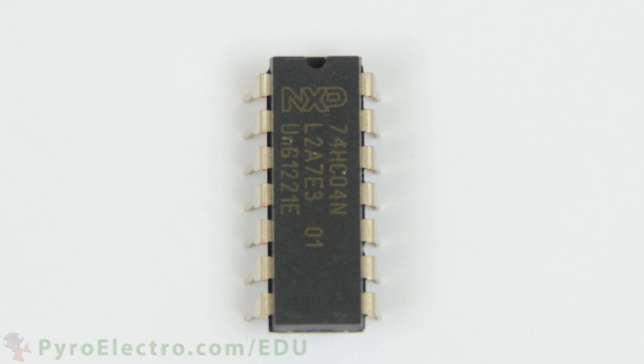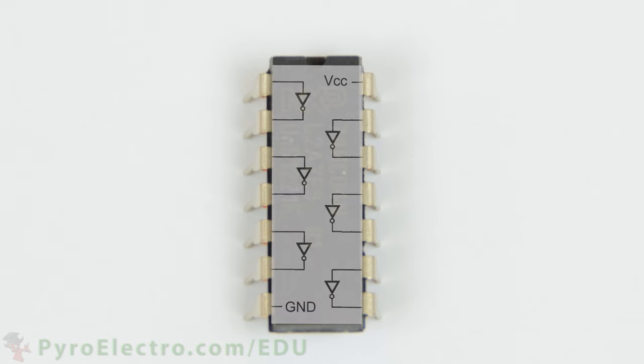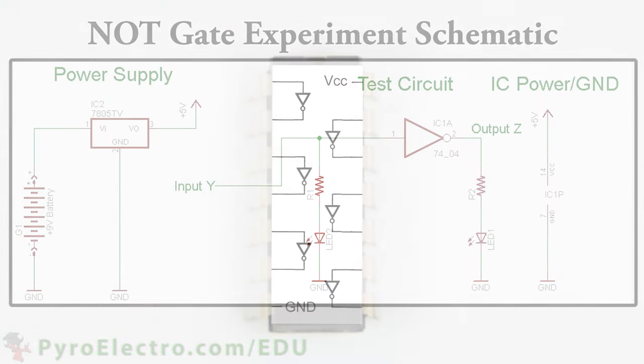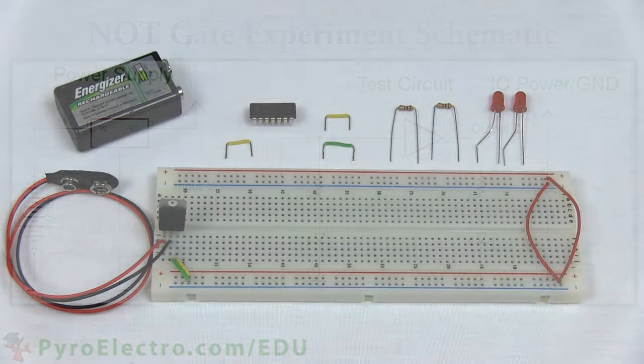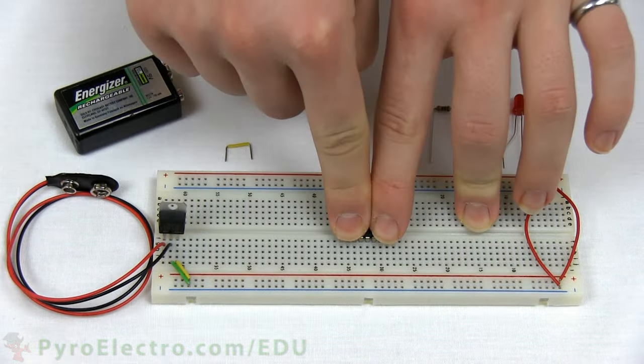The last device that we will experiment with is the NOT gate, the 74HC04. Inside of this IC, there are six NOT modules that we can use. If you remember from the theory section, the NOT gate is an inverter. Whatever is input, the opposite is output. Here is the schematic for this experiment. Notice that this time there are only two LEDs, because there is only one input and one output from a NOT gate.